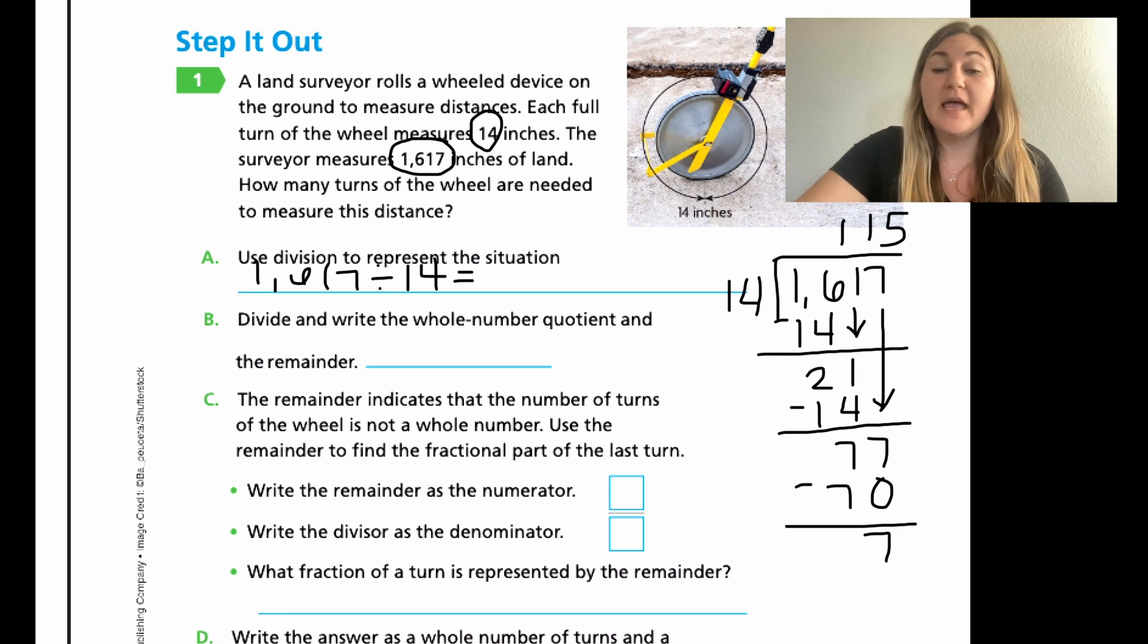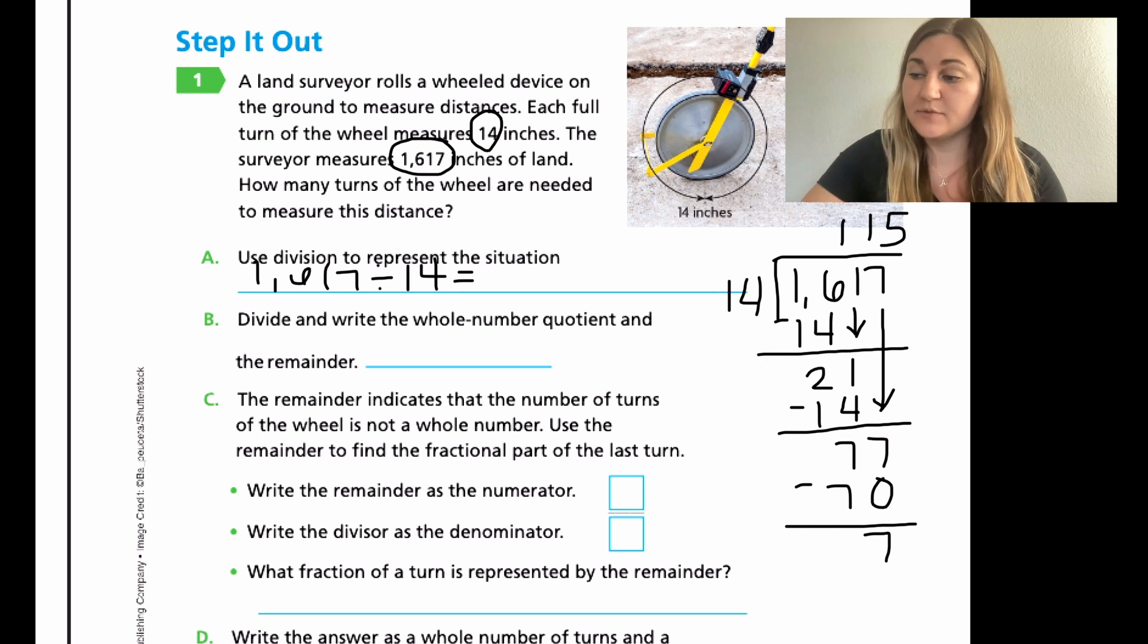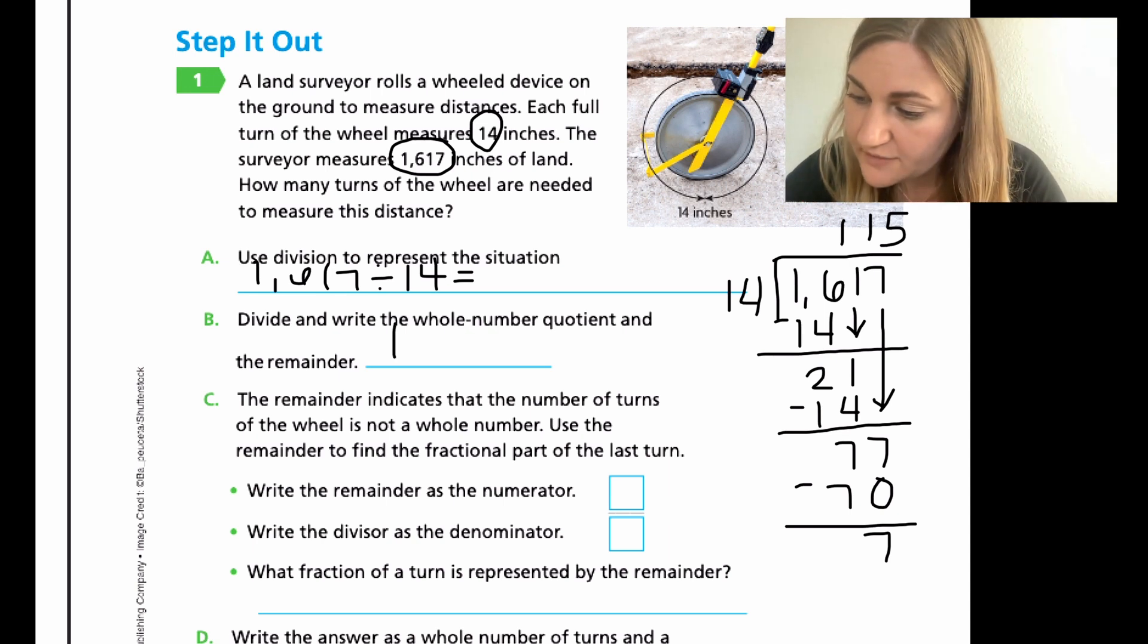I need to make sure if my estimated 5 was correct by checking if the number I subtracted is lower than my divisor. I'm looking at my 7 and comparing it to the 14. As long as the number I got is lower than that number, then I'm okay. If it's higher, that means I can divide and the answer would be one more. So now I know I got 115 remainder 7.